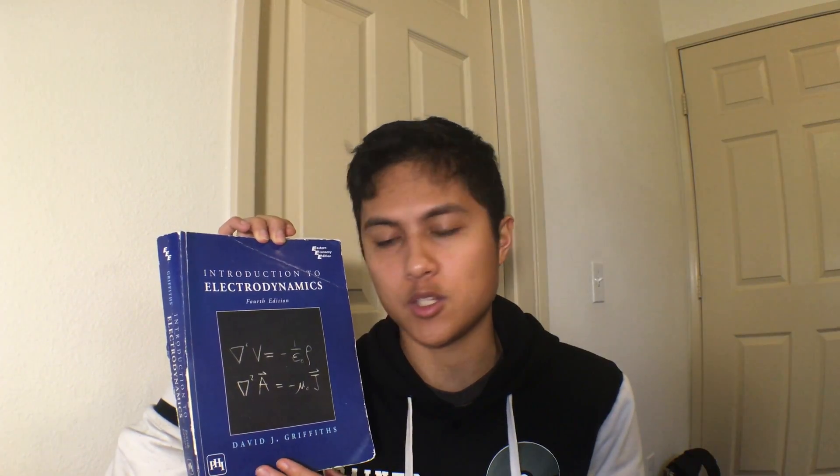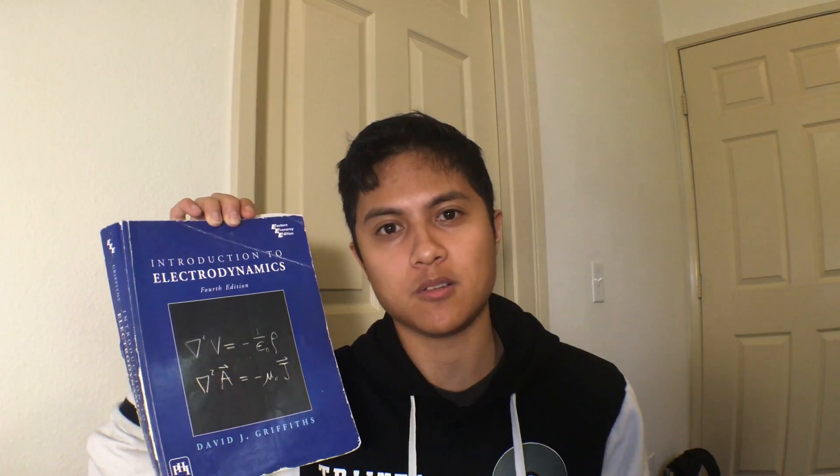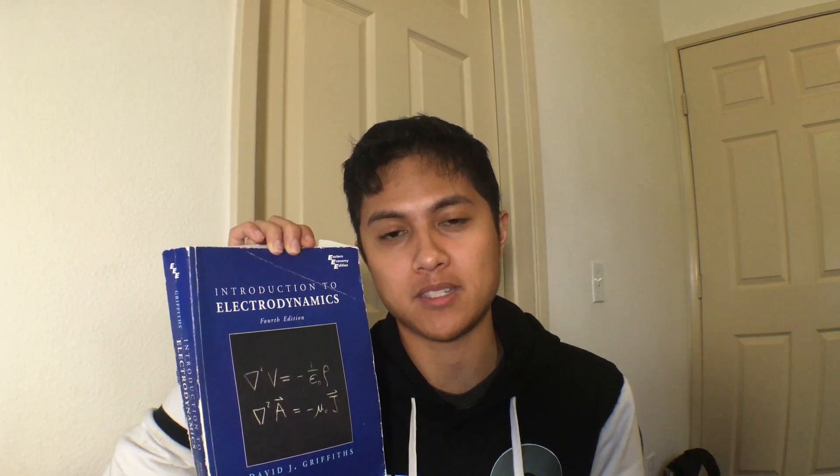If you're a physics major at the undergraduate level, you will most likely have to take a class based off of Introduction to Electrodynamics by David Griffiths. When I first went into my Electrodynamics class it was really hard — I hadn't seen Vector Calculus in about a year, and I hadn't seen Electricity and Magnetism since my introductory E&M class. You really need to be good with Vector Calculus and basic Electricity and Magnetism before you can get into that class and succeed.